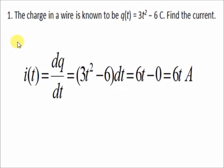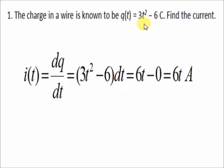For problem number 2: the charge in a wire is known to be q(t) = 3t² − 6 coulombs. Find the current. In this part, we use the derivative to get the current. The formula is I(t) = dq/dt. So, take the derivative of 3t² − 6. The derivative of 3t² is 6t, and the derivative of a constant is 0. So the final answer is 6t amperes.